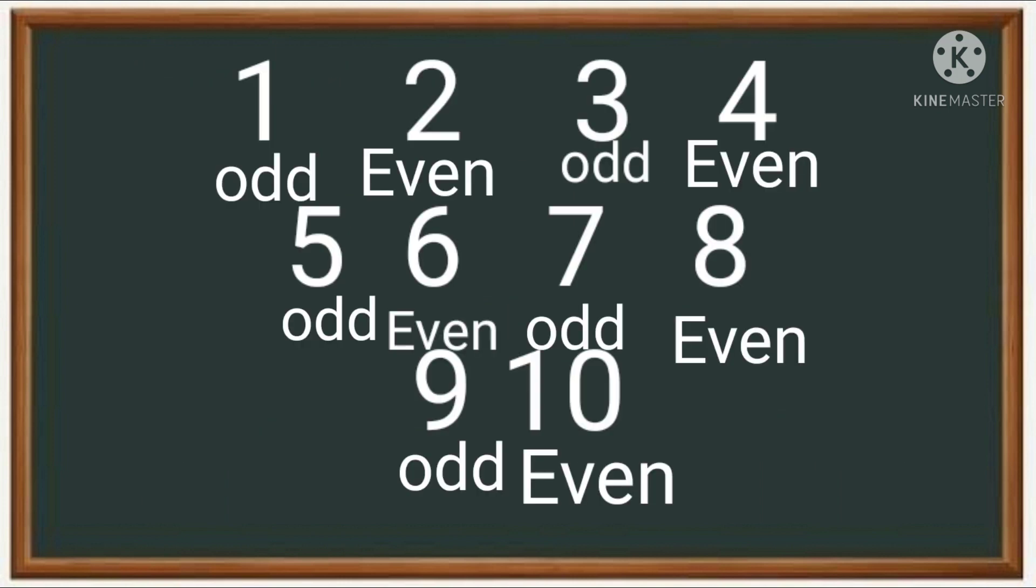The trick was, all the numbers alternate from odd to even. So one is odd, two is even, three is odd, four is even, five is odd, six is even, seven is odd, eight is even, nine is odd, and ten is even. The first trick says that all the numbers alternate from odd to even.